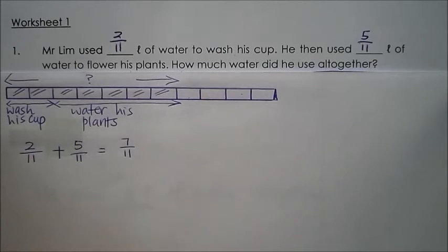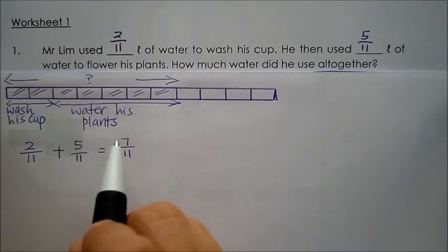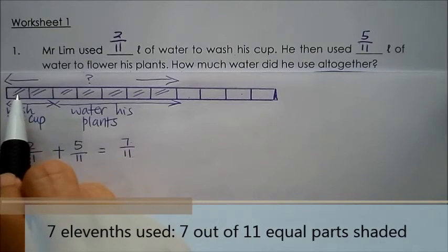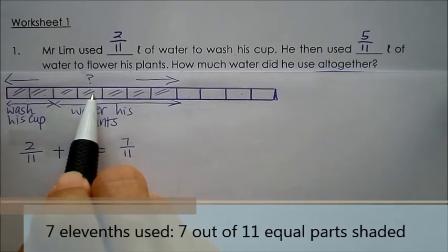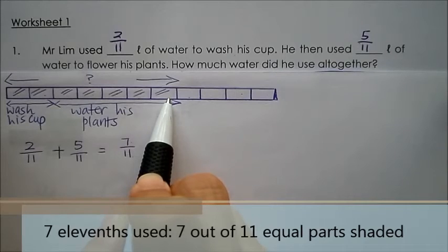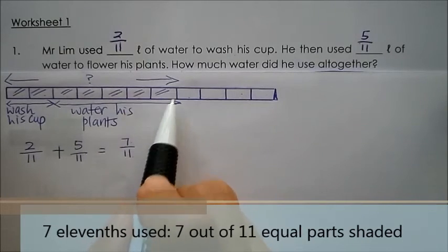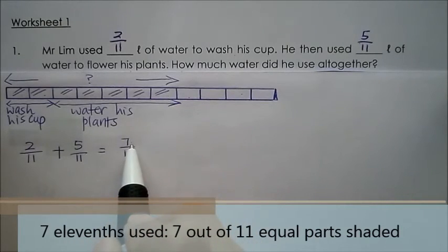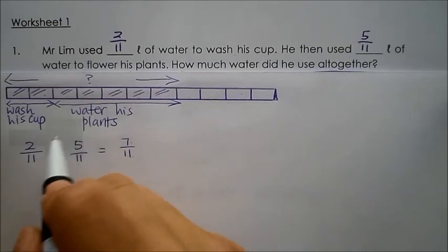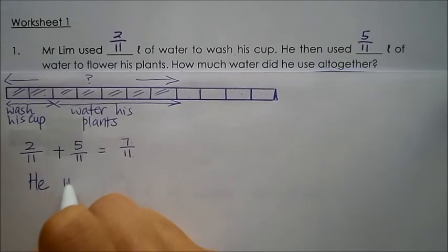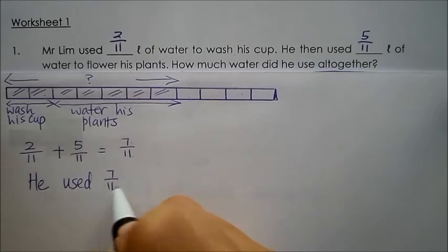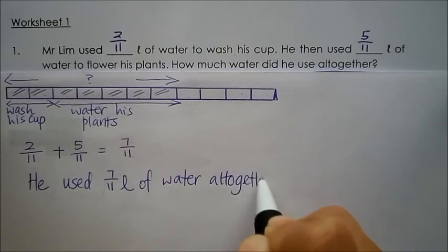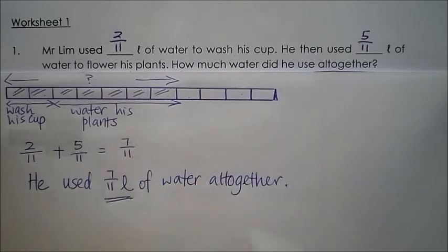So therefore, if I were to see here, how much water is actually 2 elevenths plus 5 elevenths is equal to 7 elevenths. If I were to count, I should have 7 out of 11 equal parts shaded. So let's see: one, two, three, four, five, six, seven. Seven out of 11 equal parts is used by Mr. Lim. Seven shaded parts here is shown here. Seven out of 11. So therefore, he used 7 elevenths liter of water altogether.